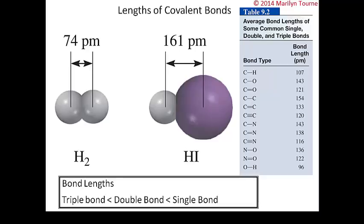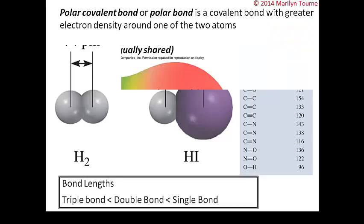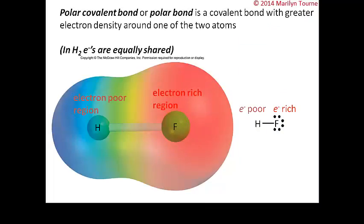Next is electronegativity, after which we will get into writing Lewis structures. So far we've learned that covalent bonds share electrons while ionic bonds transfer electrons. In H₂, two identical hydrogen atoms come together and share electrons equally. But in hydrogen fluoride (HF), fluorine has seven valence electrons and hydrogen has one — and although they share electrons, they don't share equally. The electrons spend much more time around the fluorine atom than around the hydrogen atom.